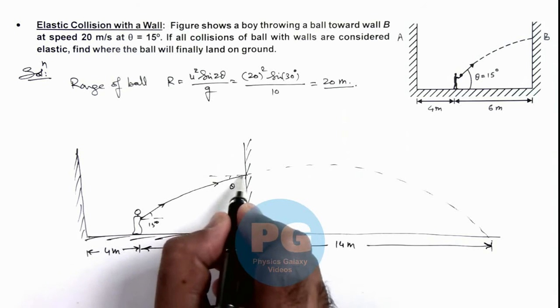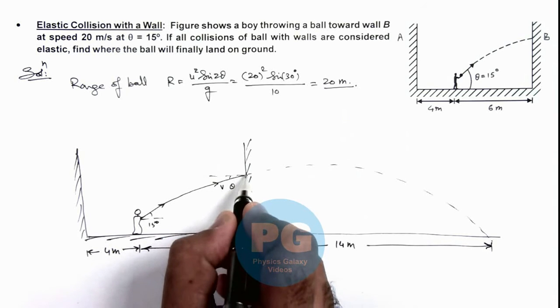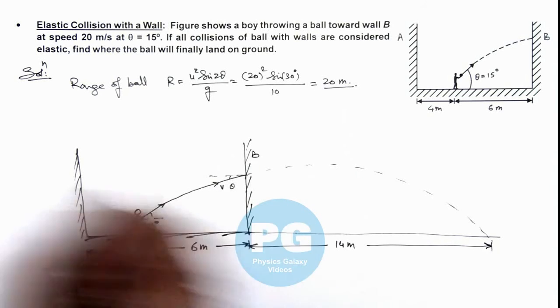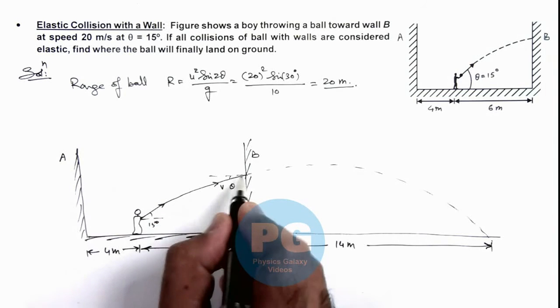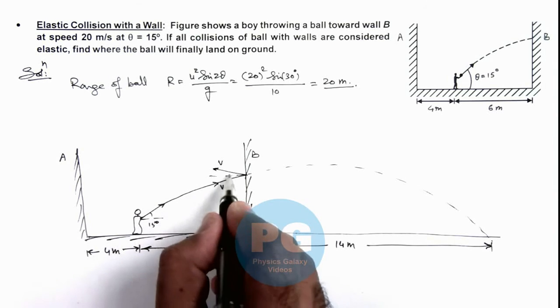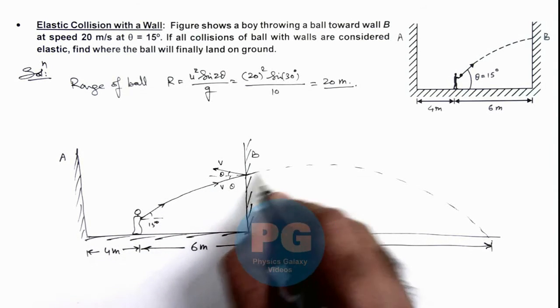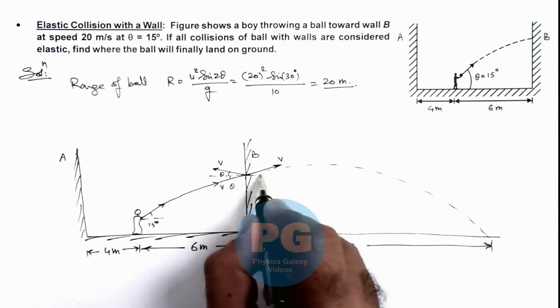But now here, if it strikes the wall B at a speed v, then it rebounds with the same speed v at an angle theta at which it would be continuing its motion if wall is not there.